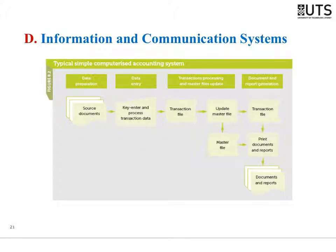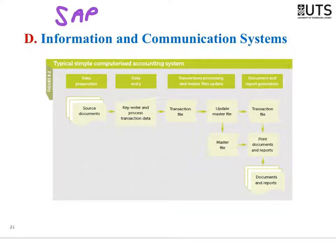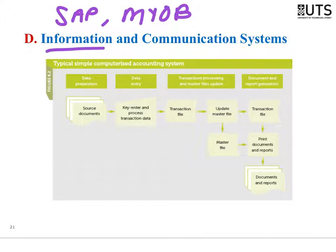The fourth component of internal control is information and communication systems. The key here is gaining an understanding of the system the business uses to collect information — what accounting system do they use? Most large organisations use SAP; smaller businesses might use MYOB or Xero. We want to understand what information system they use to capture data within the organisation.